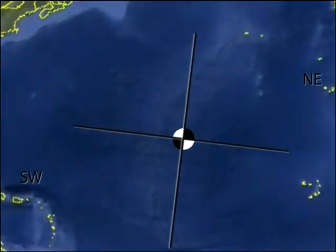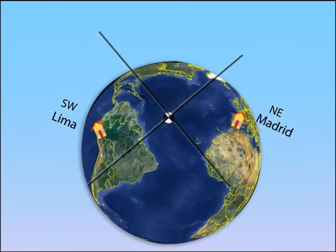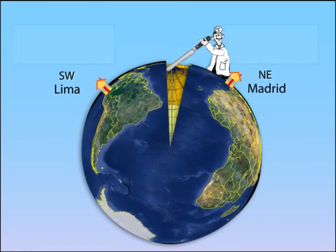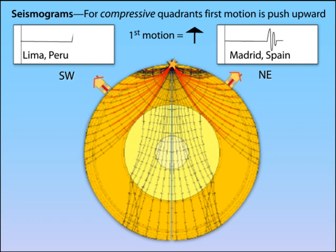First, make a vertical cut into the earth through the hypocenter in a northeast-southwest orientation. P waves leaving the earthquake and traveling to Lima, Peru in the southwest quadrant or to Madrid, Spain in the northeast quadrant will have compressional first arriving P waves that push up away from the earthquake and are observed as an initial upward vertical motion on the seismograms.